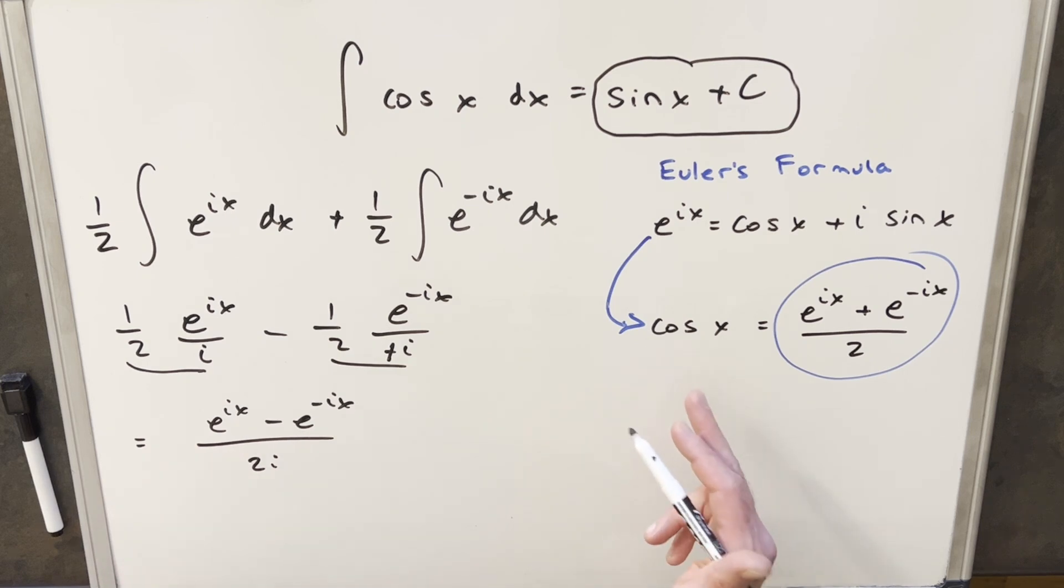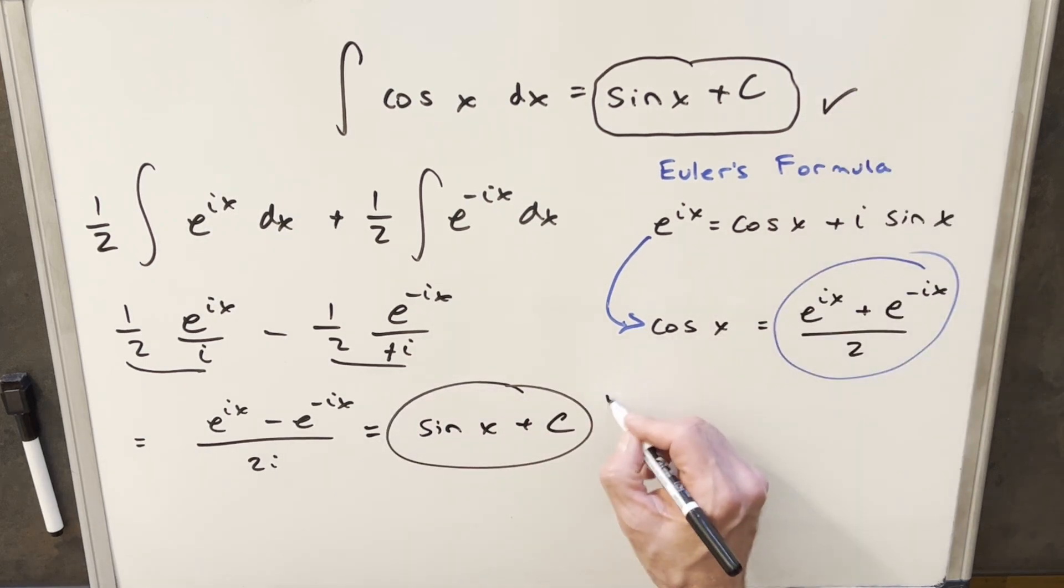But now at this point, I'm kind of regretting that I only wrote the complex definition for cosine because this here is actually the complex definition for sine. So this thing is actually the same thing as sine x. We'll put a plus c. And that's the same as what we have here.